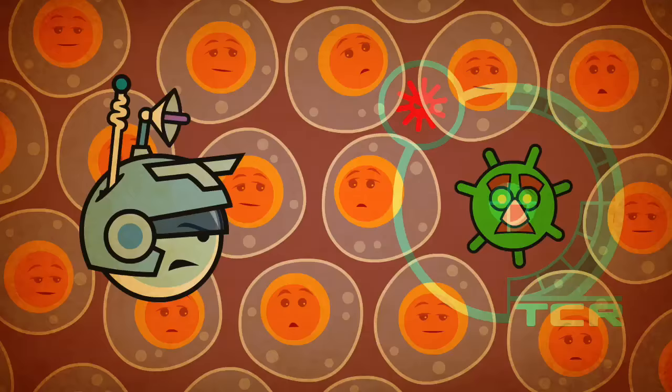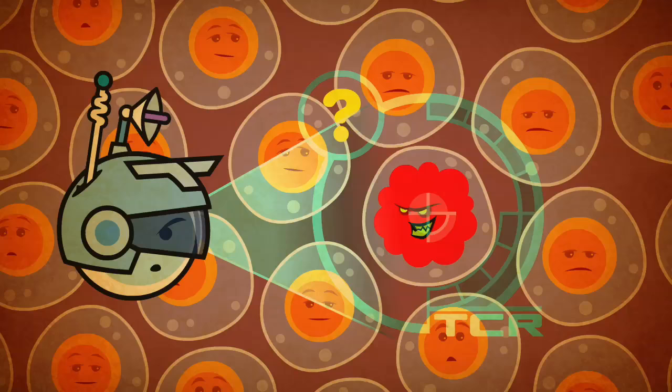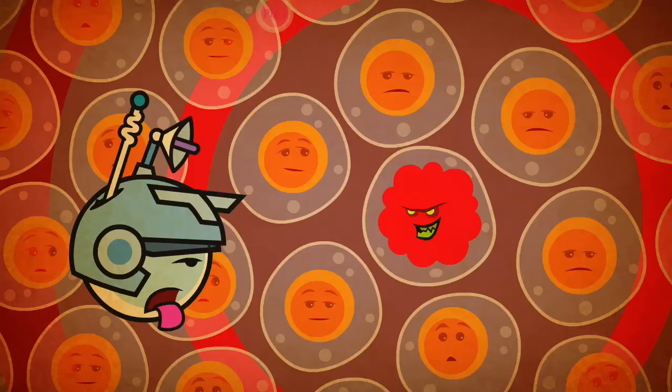But what do you do when the enemy is one of your own cells? Cancer cells are our own cells gone rogue. They also have the ability to trick T-cells by sending PD-L1 proteins that suppress them. They may slip through, resulting in cancer.